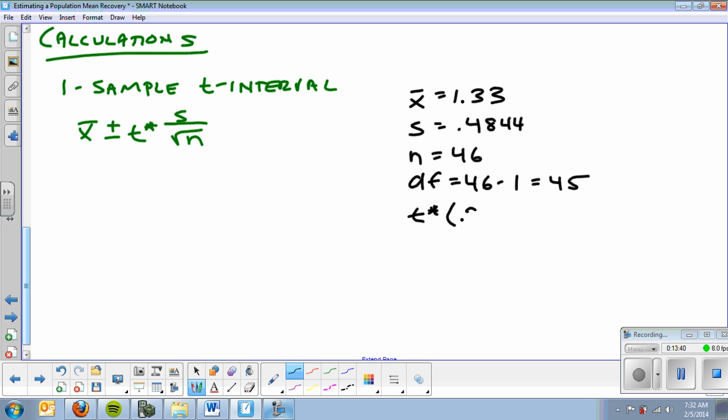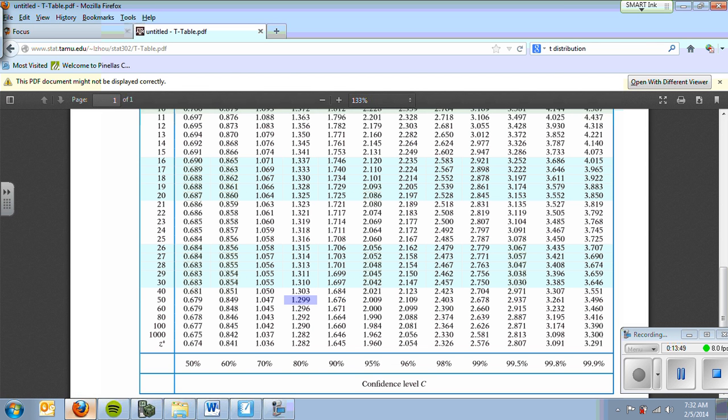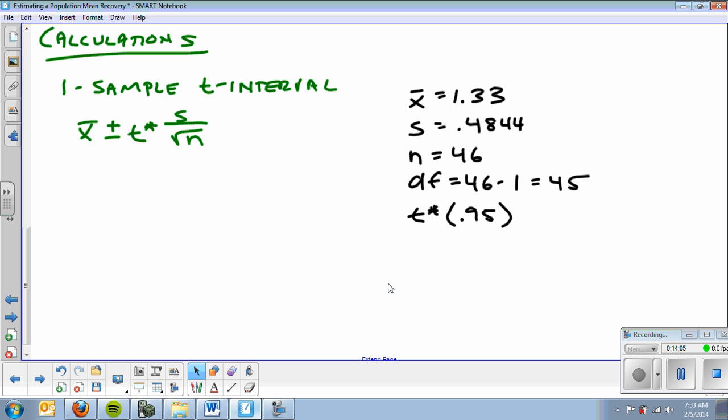Now, T star for 95%. I'm going to go to my chart. And I'm going to look up degrees of freedom, 45. 95%. So here we are at 95%. 45 degrees of freedom. I can't use 50 because I don't have 50. But I can use 40 because I got 40. And I get 2.021.